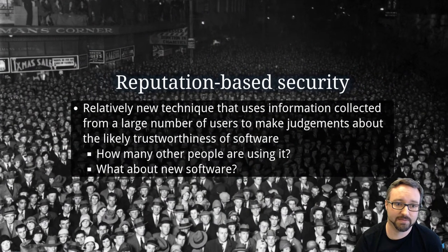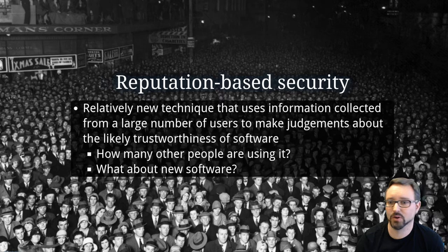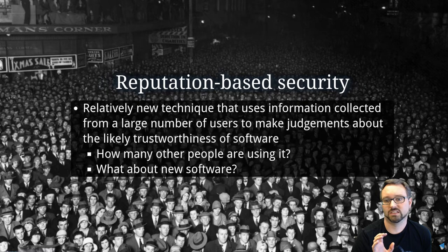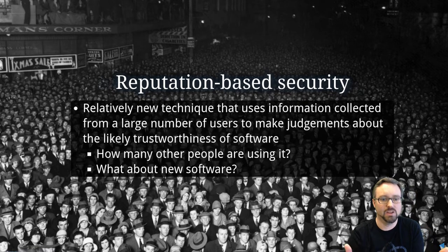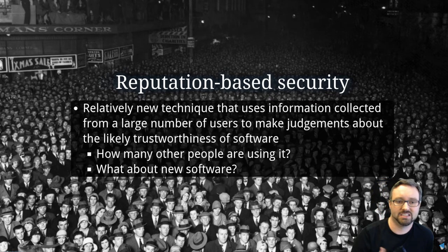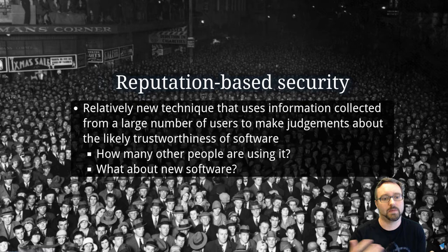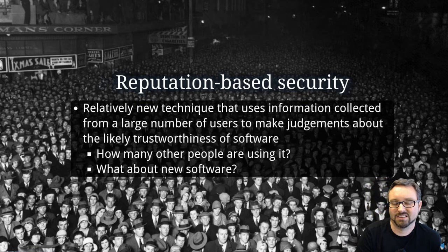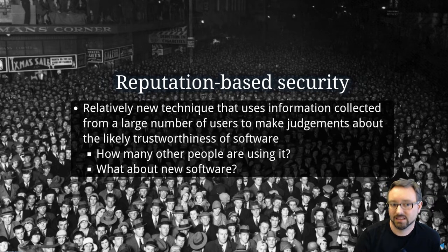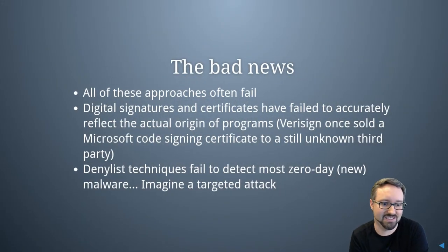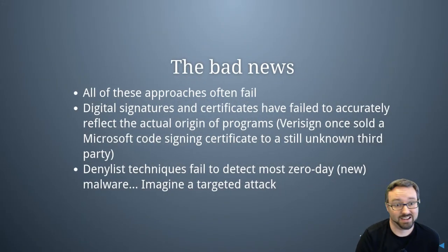There's also a relatively new approach called reputation-based security. The first time a particular piece of software appears across a large number of users, it can be flagged. Over time, as more and more people use that software, it starts to be trusted. When new malware comes out, it can begin to be detected through this mechanism, though new software can still trigger the rules and cause issues.